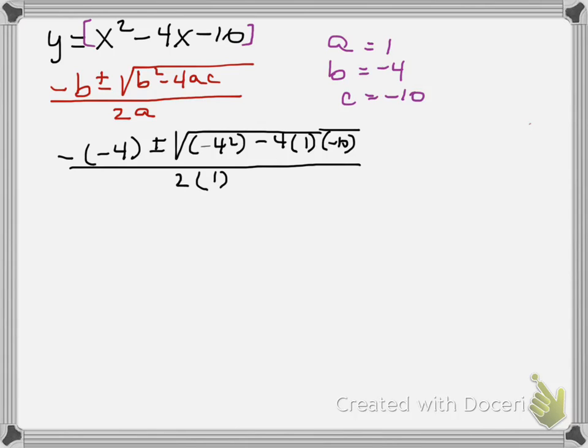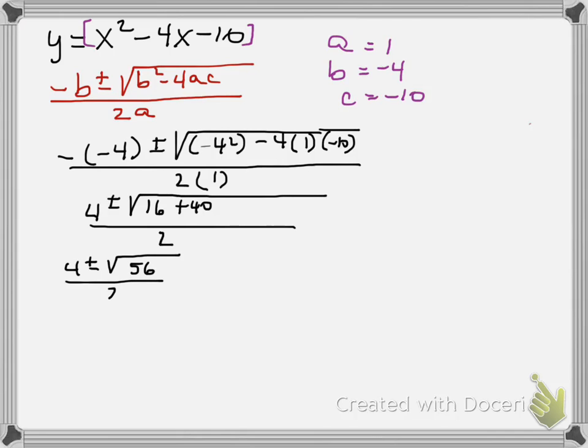Now we're going to simplify this. Negative times negative 4 is positive 4, plus or minus the square root of 16 plus 40 divided by 2. So 4 plus or minus the square root of 56 divided by 2.